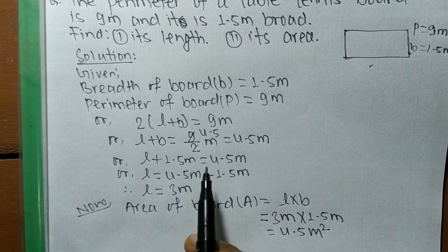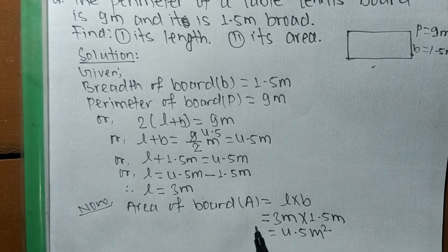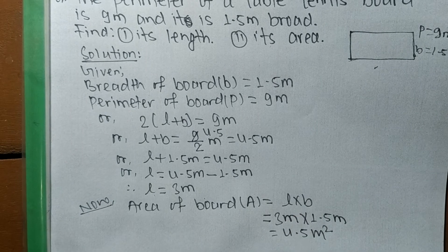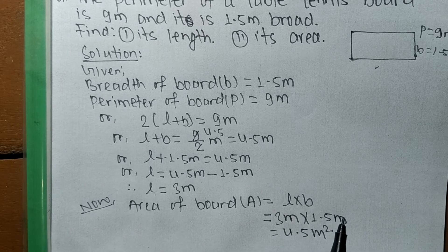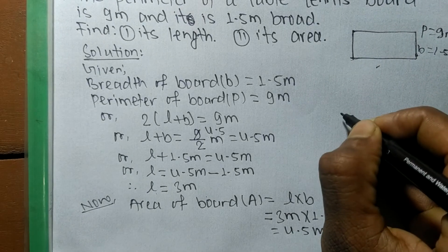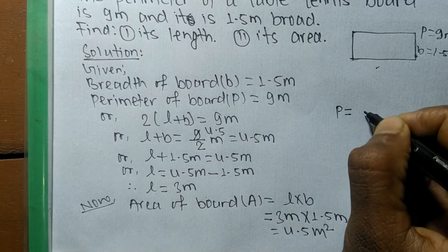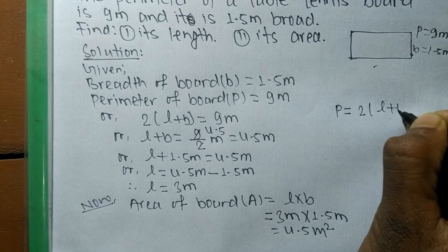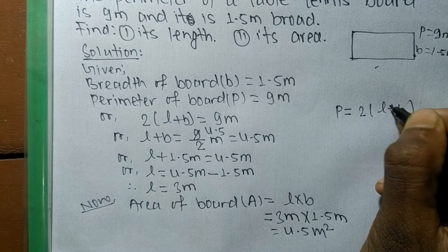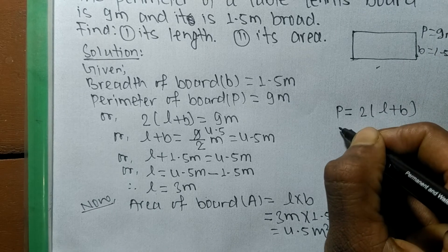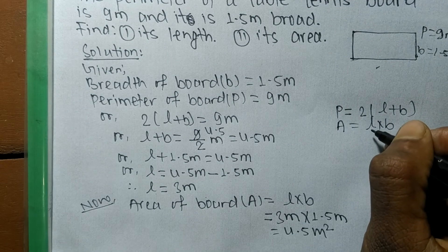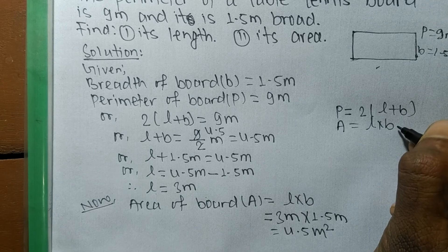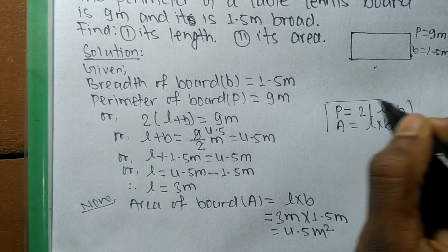So we have found the value of both length and area. The length is 3.5 meters and the area is 4.5 square meters. To summarize: the perimeter of a rectangle equals 2 times (l plus b), where l denotes length and b denotes breadth, and the area of a rectangle equals l times b.